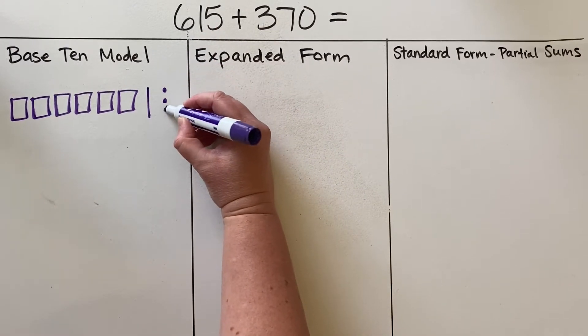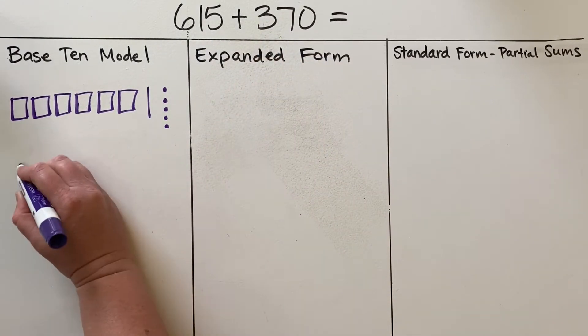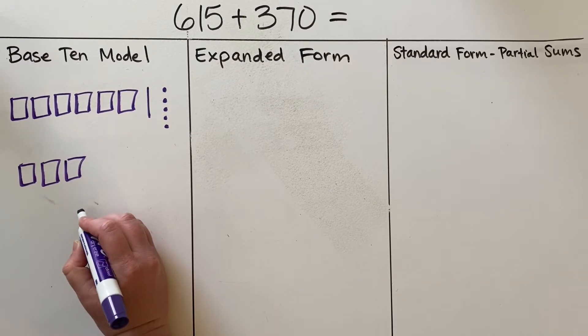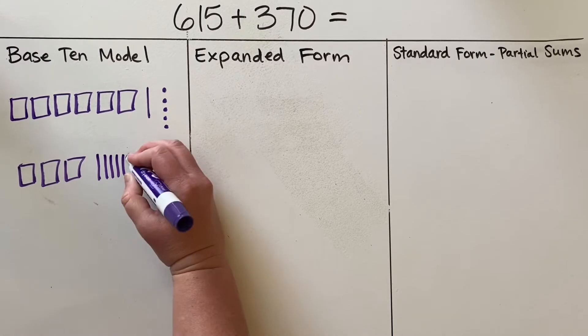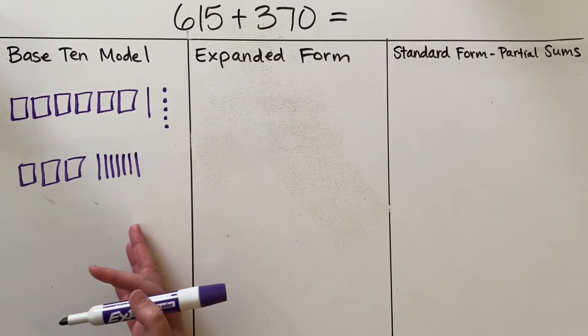For my second addend here, 370, I have three hundreds, seven tens—two, three, four, five, six, seven—and zero ones.